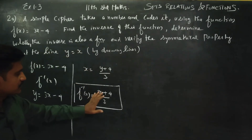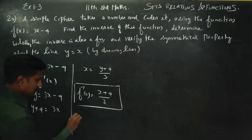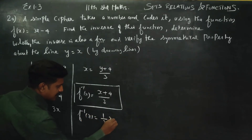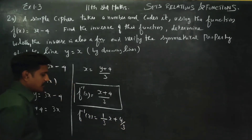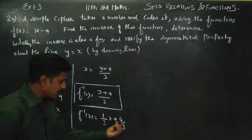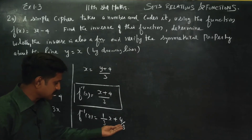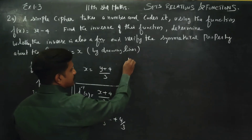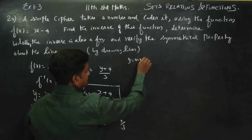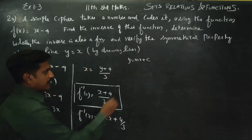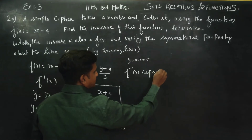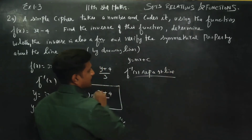If the inverse is also a function, it is an inverse function. So the inverse of x can be written as 1 by 3 times x plus 4 by 3. Actually, this is the equation of a straight line — y is equal to mx plus c. F inverse of x represents a straight line.